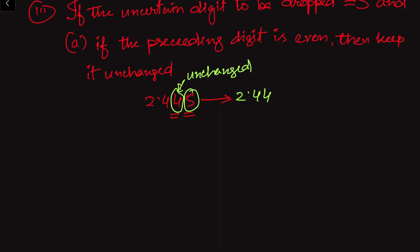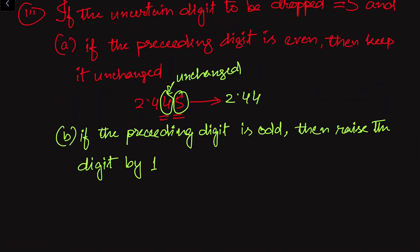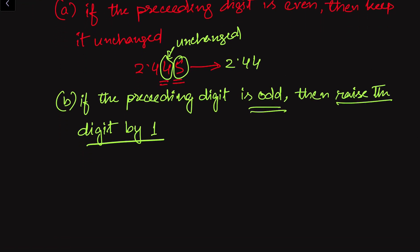In the second sub-case of case 3: when the digit to be dropped is equal to 5 and the preceding digit is odd, we have to raise that previous digit by one. So if we have 2.455 and round off to three digits, we get 2.46 — we have raised the odd 5 by 1.